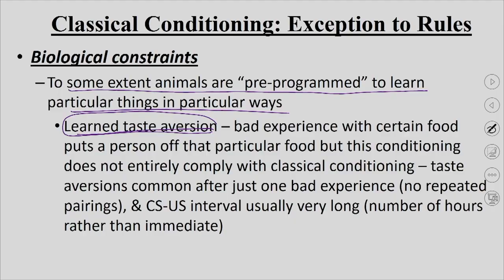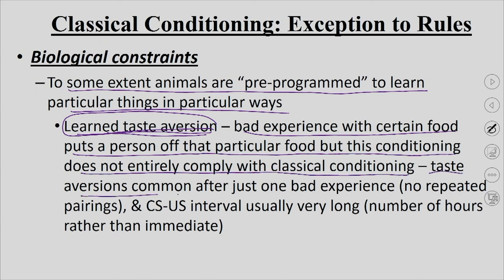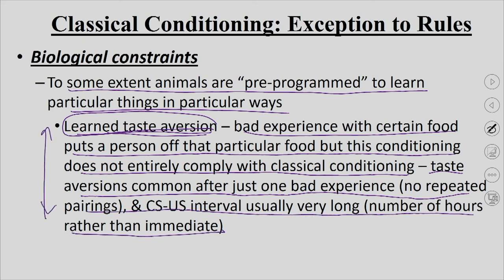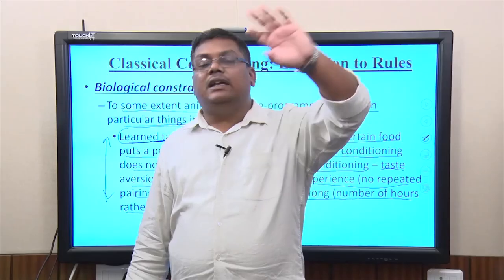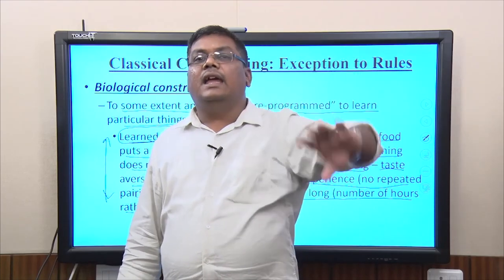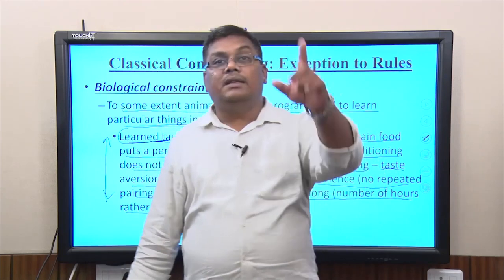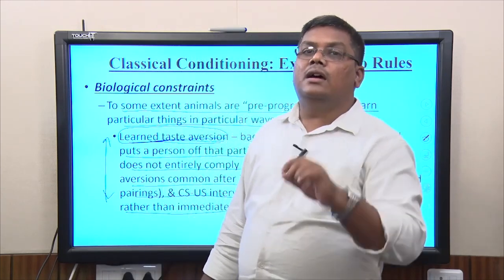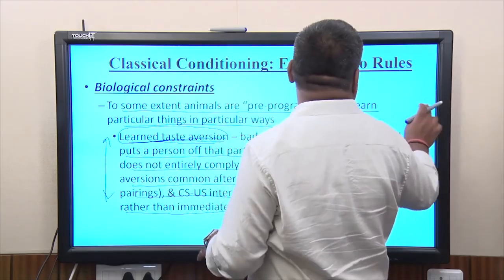This is tested in rats as well and is called learned taste aversion. A bad experience with a certain kind of food puts a person off that food, but this does not entirely comply with classical conditioning — taste aversion is common after just one bad experience with no repeated pairing, and the CS-UCS interval is usually very long, several hours. You ate at the restaurant at 10 AM and got food poisoning at night, yet you still associate that restaurant with the poisoning.